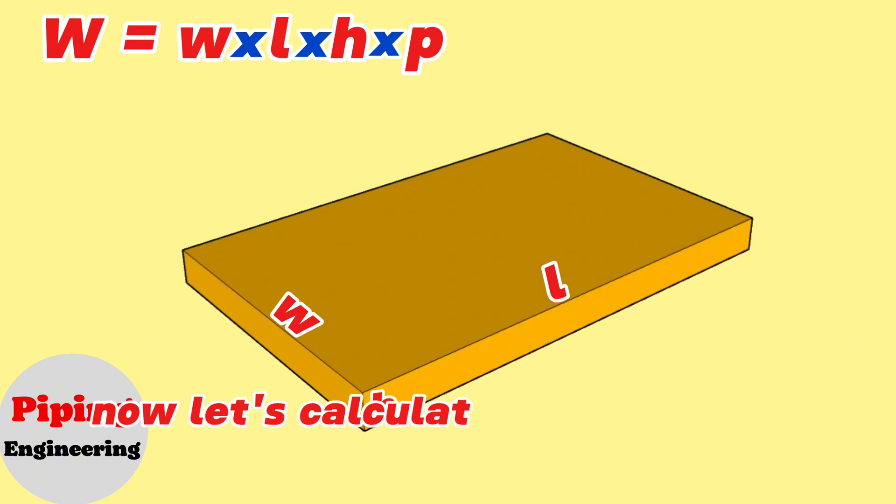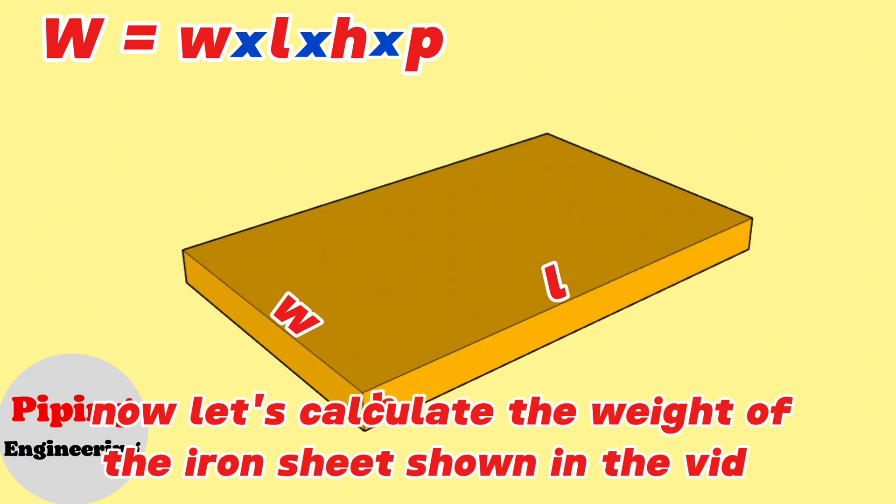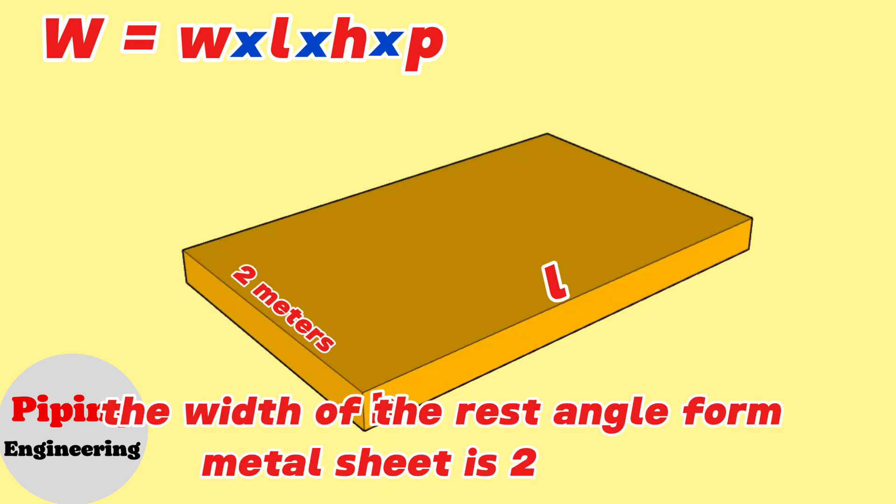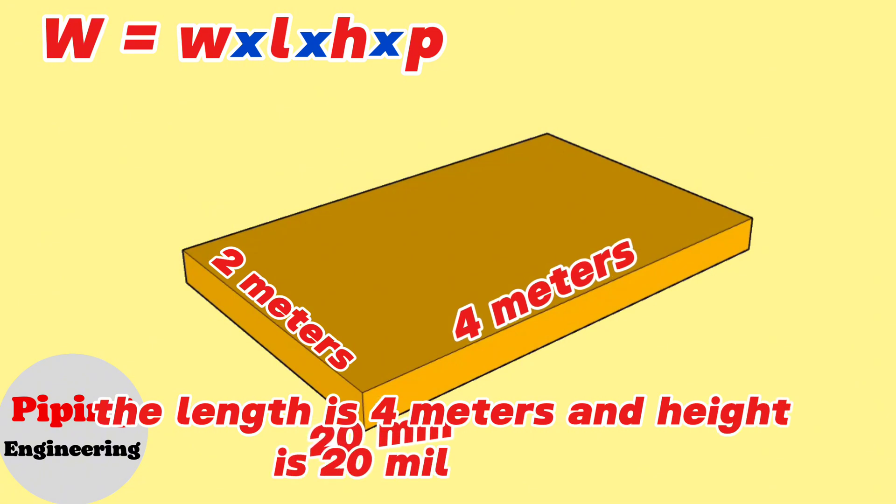Now let's calculate the weight of the iron sheet shown in the video using this formula. In our example, the width of the rectangle form metal sheet is 2 meters, the length is 4 meters, and height is 20 millimeters.